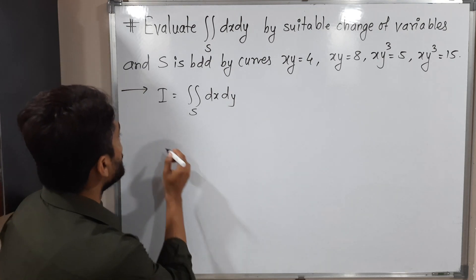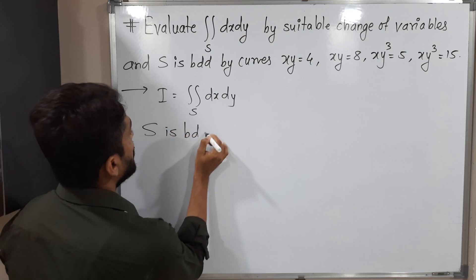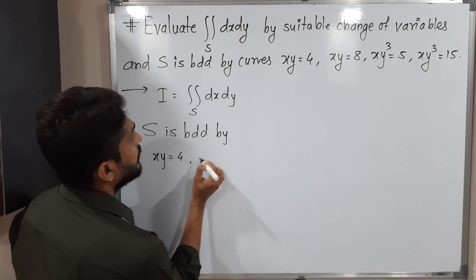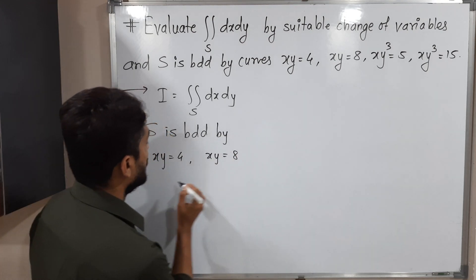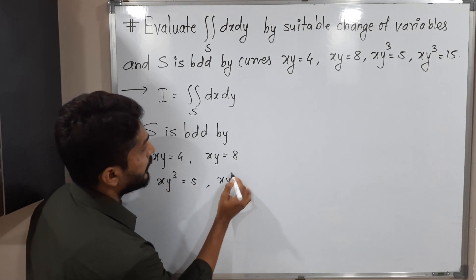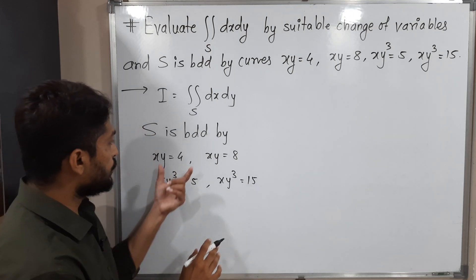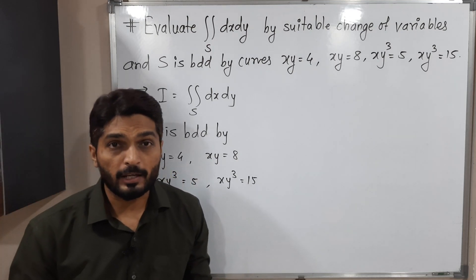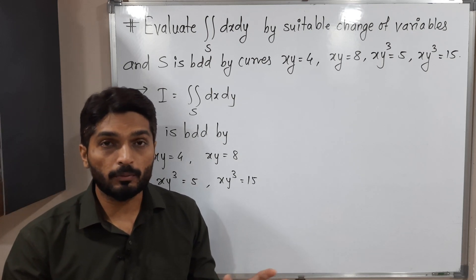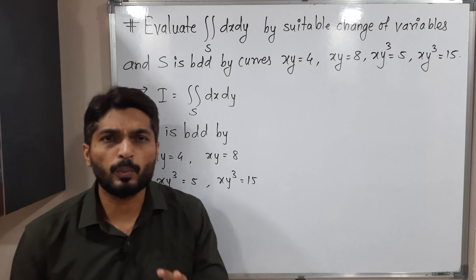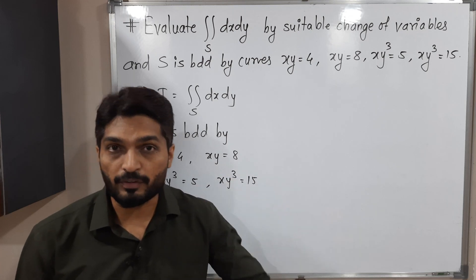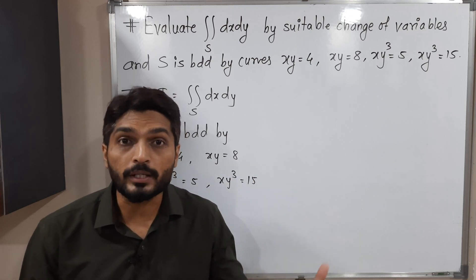S is bounded by xy = 4, xy = 8, xy³ = 5, and xy³ = 15. These two are equations of rectangular hyperbolas and these two are quite difficult. So if you draw the regions in the xy plane, it is quite difficult. So what we do — we use substitution, we convert the problem to different variables to make it easier to solve.